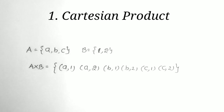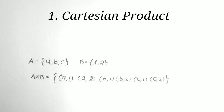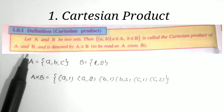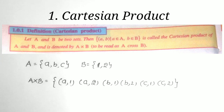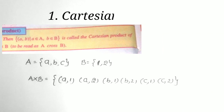This is called the Cartesian product — the set of all possible ordered pairs from set A to set B. The mathematical definition: let A, B be two sets; then the set of all (a, b) such that a belongs to A and b belongs to B is called the Cartesian product of A and B, denoted A×B.